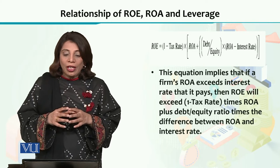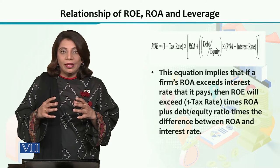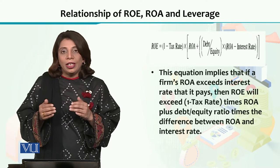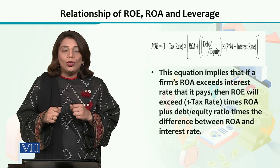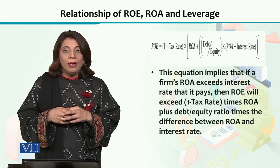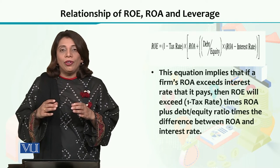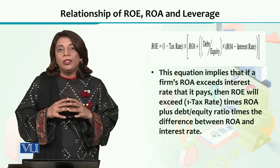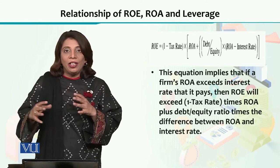Return on equity can be explained in terms of ROA and the interest rate. Jo difference hai — ROA exceed karega jitne proportion se, jitni value ROA ki greater hogi interest rate se — usko aapne multiply karna hai debt to equity ratio se, aur yeh add karke ROA mein, phir hum isko multiply karenge one minus tax rate se. This will give you the value of return on equity. With this formula we can have an idea how return on assets, debt equity ratio, and interest rate are interlinked with each other.